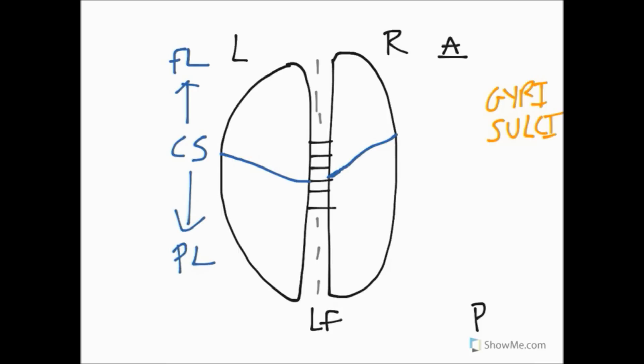If you keep going posteriorly you will end up in the occipital lobe at the back of the brain. Unfortunately, you won't be able to see where the parietal lobe ends and the occipital lobe begins from this particular view. You have to look at a different view to see the sulcus that separates them.